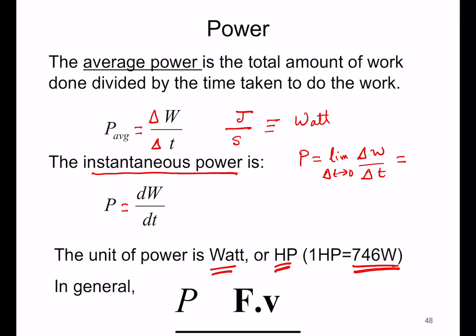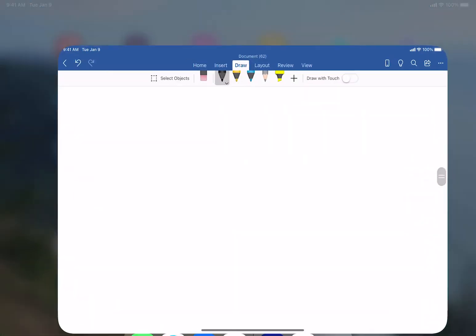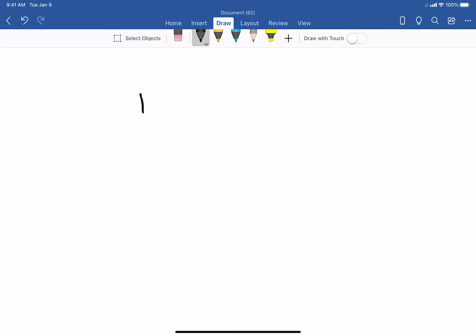There's another useful relationship: power is equal to F·v. And let me just show you how this comes about. So power is dW/dt, the rate at which work is done.